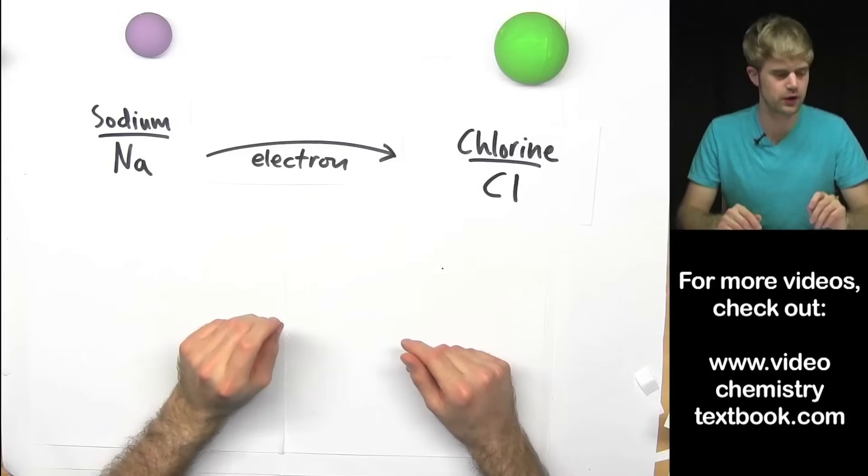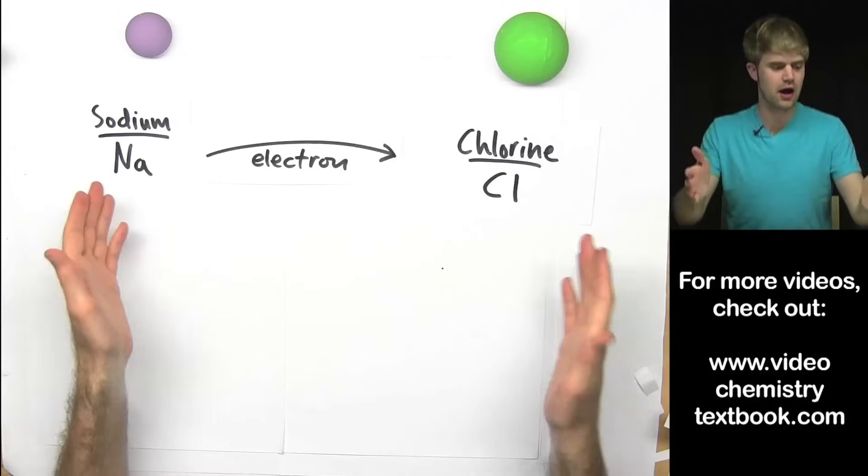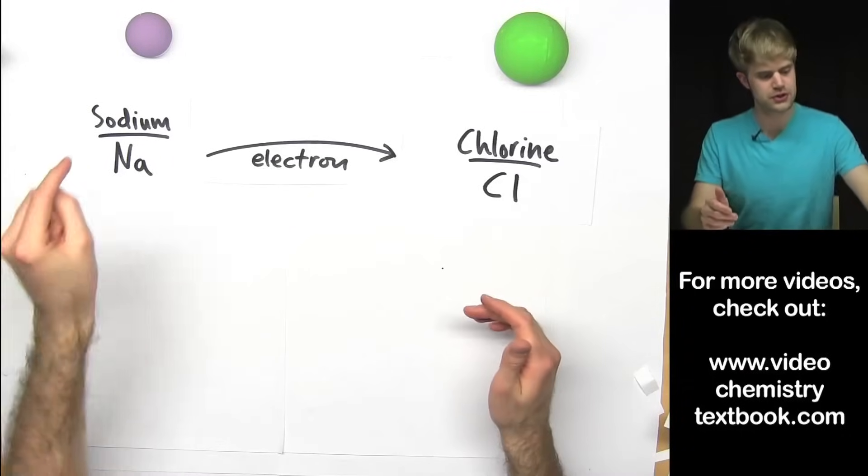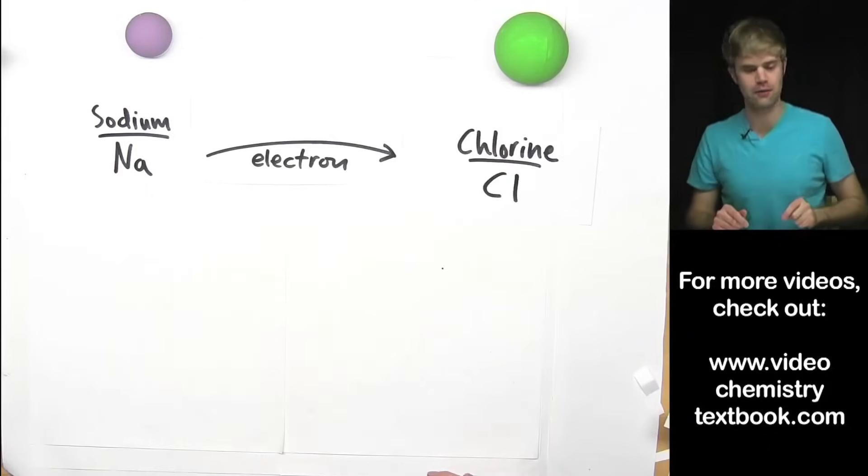Finally, let's just talk naming really quickly. So when this ionic bond forms, we start with sodium, Na, and chlorine, Cl.